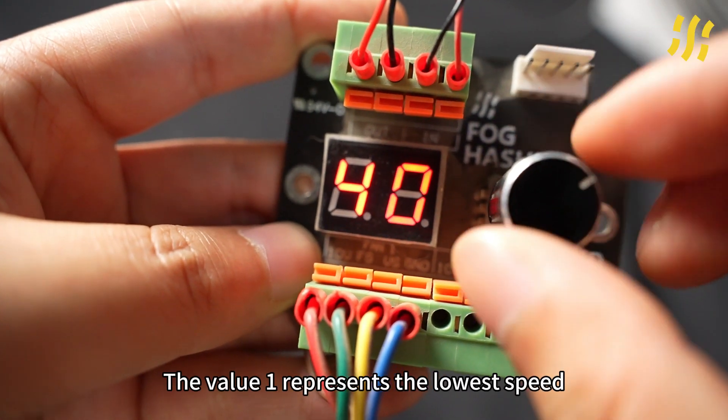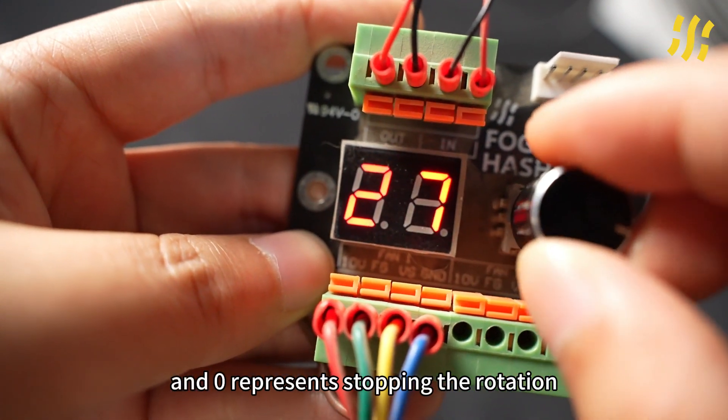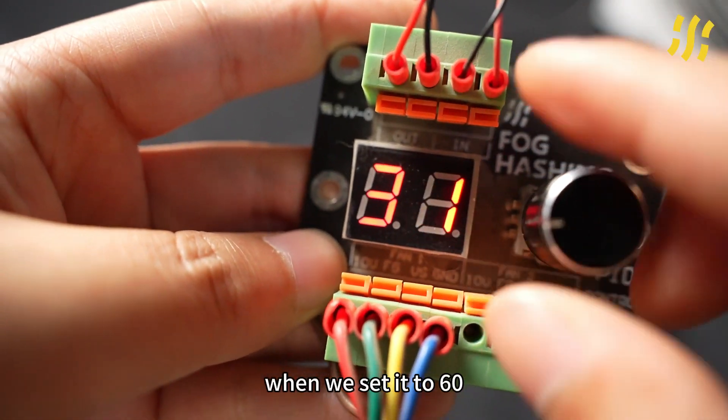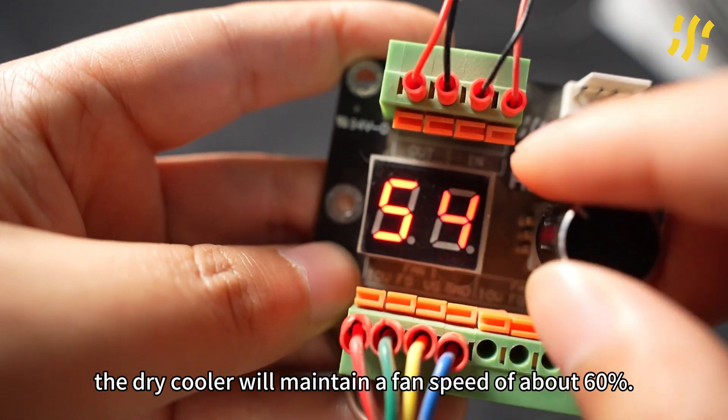The value 1 represents the lowest speed, 99 represents the highest speed, and 0 represents stopping the rotation. For example, when we set it to 60, the dry cooler will maintain a fan speed of about 60%.